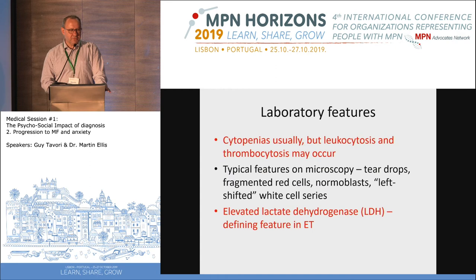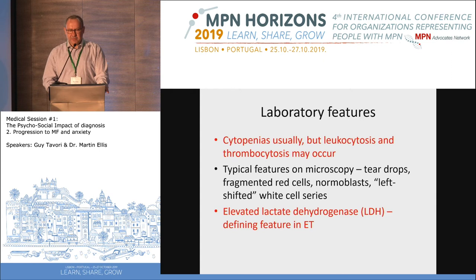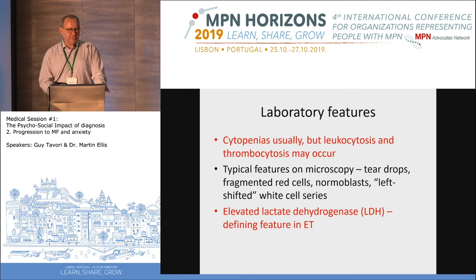Laboratory features include decreased blood counts as the bone marrow progressively fails to produce cells. However, high white counts and high platelet counts can also occur and confuse the picture, so any change in the blood count may be important. On microscopy: abnormal teardrop-shaped red blood cells, fragmented red blood cells, and normoblasts escaping the bone marrow into peripheral blood, along with a left shift in white cells — together called leukoerythroblastic findings.